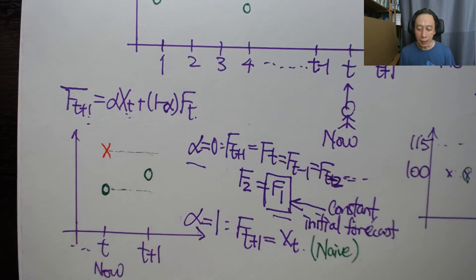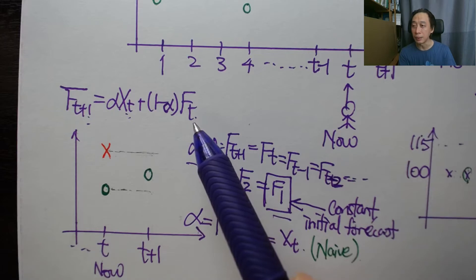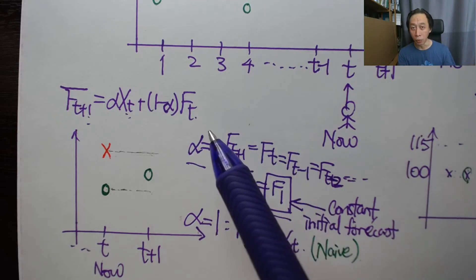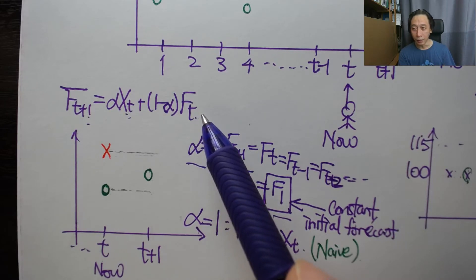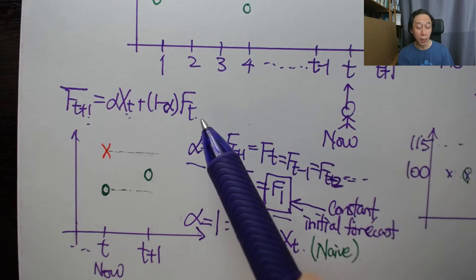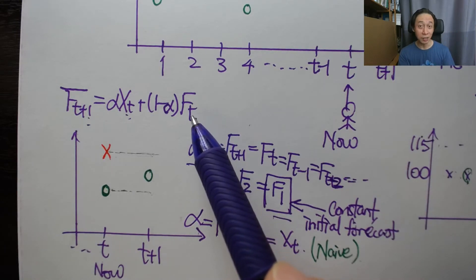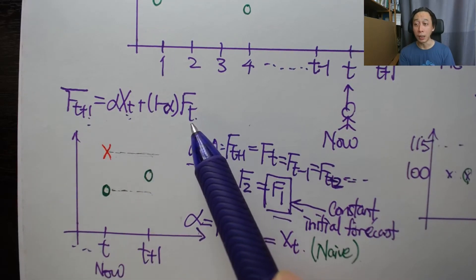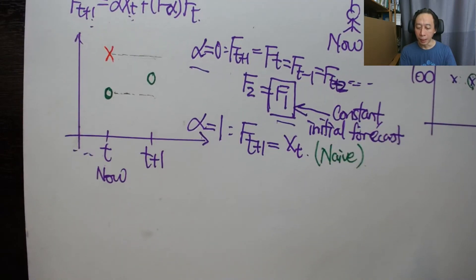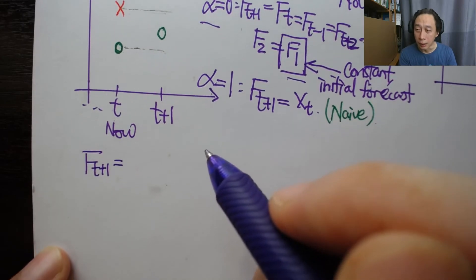Now, a concern: earlier methods never incorporated past forecasts, which felt reassuring because we weren't contaminating new forecasts with old errors. But in exponential smoothing, we are touching our past forecast. How can that be right for a state-of-the-art algorithm? Let's look deeper into the formula to see if that concern is justifiable.